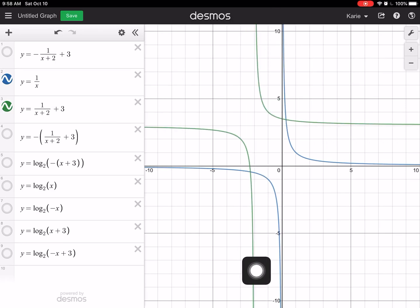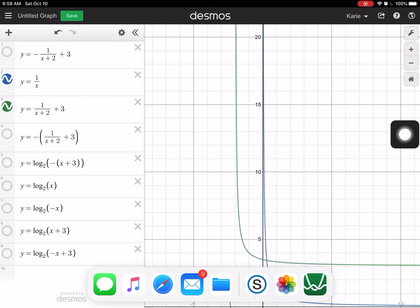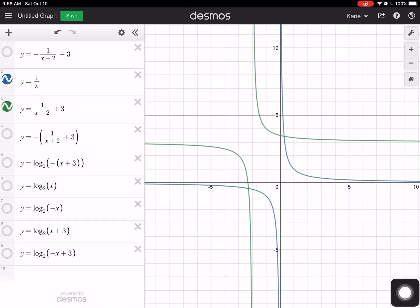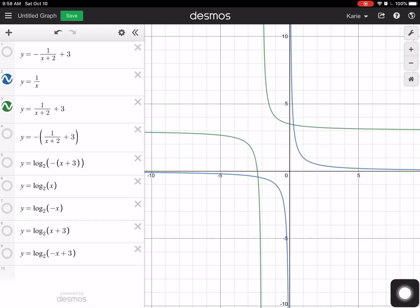So the asymptotes initially had been at x equals zero and at y equals zero, and now it's at x equals negative two because it went two to the left, and then up three. So on this one, if I then do a reflection of that,